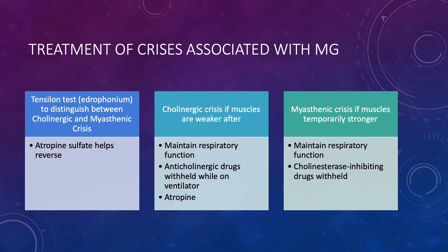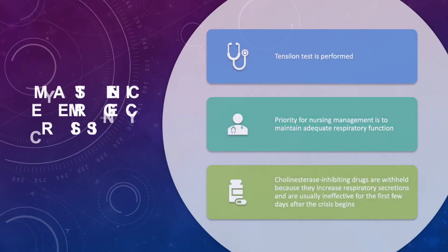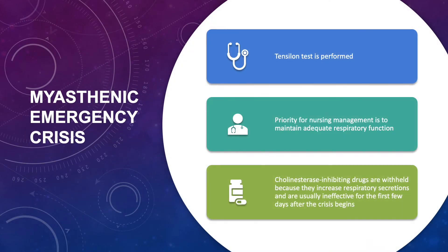However, if after the test the muscles are temporarily stronger — myasthenic crisis — maintain respiratory function, and in this case cholinesterase inhibiting drugs are withheld. To review: the Tensilon test is performed, the priority for nursing management is to maintain adequate respiratory function, and cholinesterase inhibiting drugs are withheld because they increase respiratory secretions and are usually ineffective for the first few days after a crisis begins.